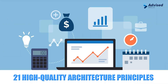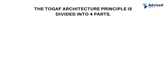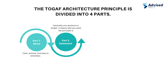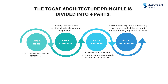TOGAF has laid out an example set of 21 high-quality architecture principles. Each TOGAF architecture principle is divided into four parts: Part one — Name, which should be clear, precise, and easy to remember. Part two — Statement, generally one sentence that clearly tells you what the principle is. Part three — Rationale, an explanation of why the principle is important and how it benefits the business. Part four — Implications, a list of what is required to carry out the principle and how it could impact the business.